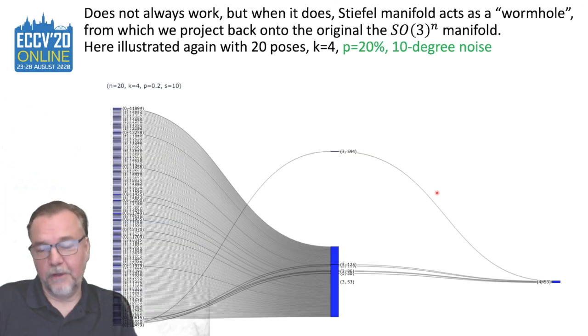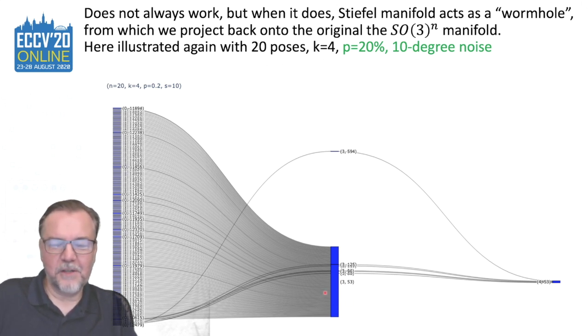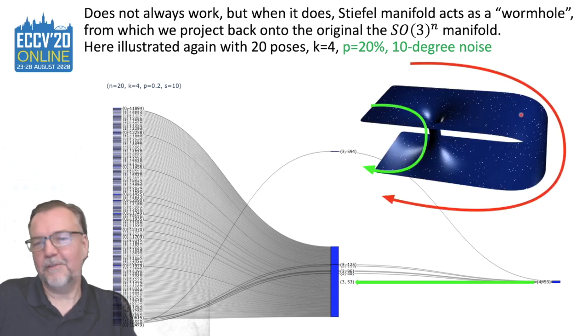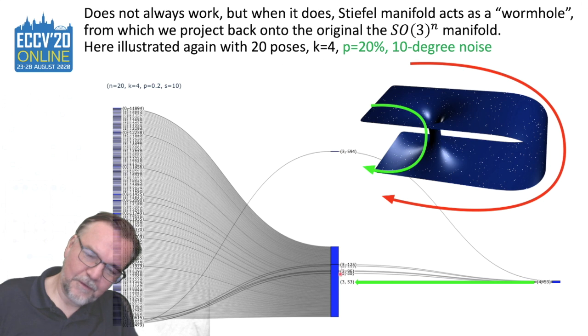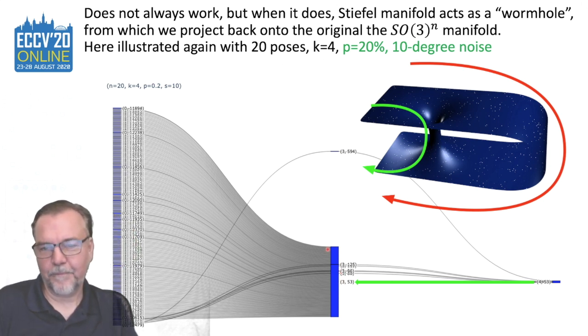This does not always work. But when it does, you can think of the Stiefel manifold to act as a wormhole. So most of the time we actually converge at level three, but then if you don't, if you get stuck on the long way, so there is some local optimum here, in this case, the Stiefel manifold provides sort of a wormhole that goes to a different level, and then we can project back to level three, and we converge. That's the intuitive idea.